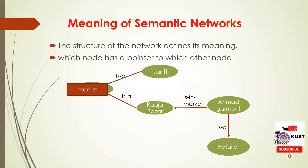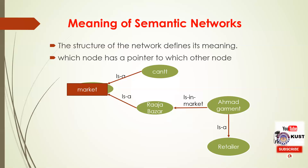It is important to note that the node labeled 'market' represents the generic or meta concept of a market — it possesses properties common to all markets. The node Raja Wazaar represents a particular market. The node 'retailer' again represents the concept of a retailer common across all particular retailers, and Ahmed Garment is one instance of such a retailer. We can distinguish the two types of nodes using boxes and circles.